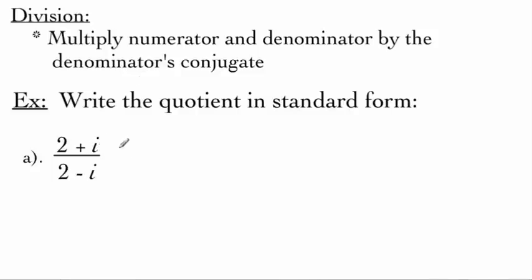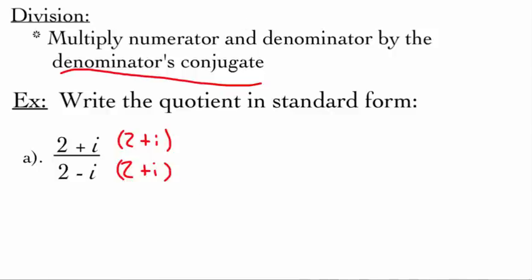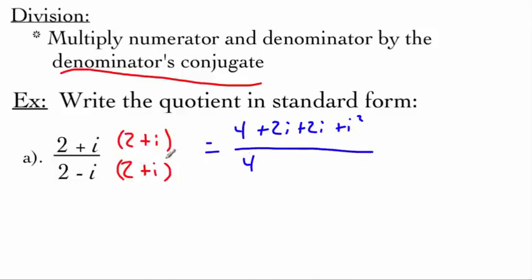For our first example, we've got (2 plus i) divided by (2 minus i). The conjugate of the denominator is 2 plus i, so we multiply top and bottom by that. FOILing the top: 2 times 2 is 4, 2 times i is 2i, i times 2 is another 2i, and i times i is i squared. On the bottom, the plus 2i and minus 2i cancel, and negative i squared equals positive 1, so the denominator is 4 plus 1 equals 5.